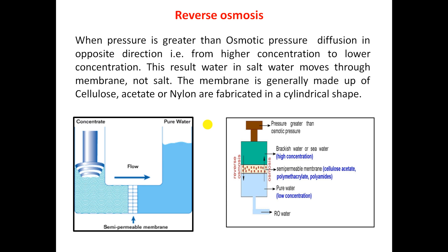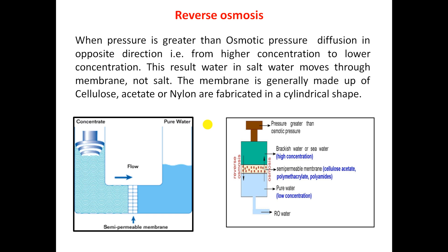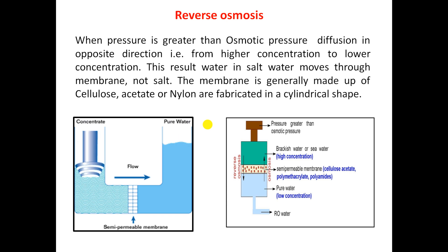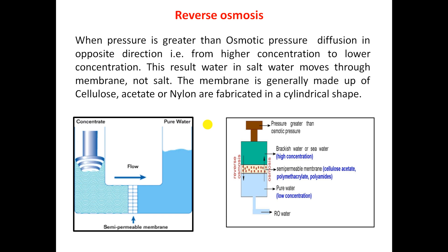Now we are going to discuss about reverse osmosis. In reverse osmosis, we apply a pressure which is greater than the osmotic pressure, causing diffusion in the opposite direction — from higher concentration to lower concentration. Because of the applied pressure which is greater than osmotic pressure, water will move from the higher concentration to lower concentration side, that means from highly saline water to the demineralized water side.